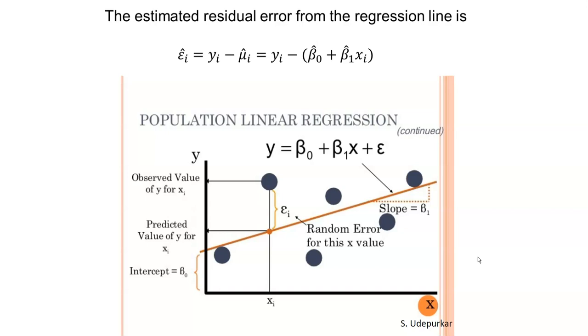Here's a graphical representation of what we're doing. Epsilon sub i hat equals our observed value yi minus the population mean mu sub i hat, which equals yi minus our regression equation, beta 0 hat plus beta 1 hat times xi. We end up with a line for beta 0 plus beta 1 times x. Each point will deviate from that line somewhat, and we call that the random error, represented by epsilon.